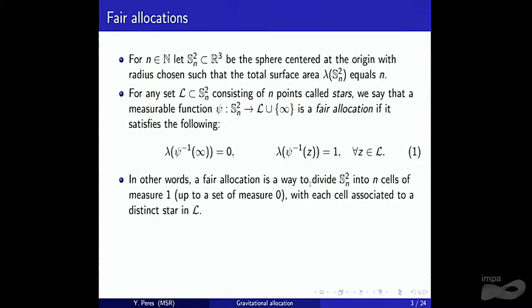Before going to matchings, we discuss the closely related notion of a fair allocation. We take our manifold — mostly we'll work with the sphere S²_n, the two-dimensional sphere of area n. The set L will be n special points called stars or centers. These stars induce a partition of the sphere given by a function ψ, which maps almost all points on the sphere to a star, with the pre-image of every star having the same area — that's what's called a fair allocation.